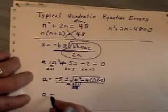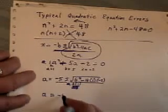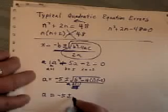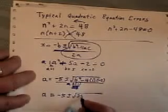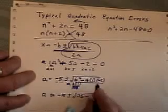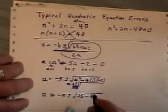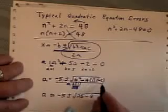The mistake that comes up here is they end up goofing the negative sign. So they say it's 25 minus 8 when in fact it should be 25 subtract negative 8.